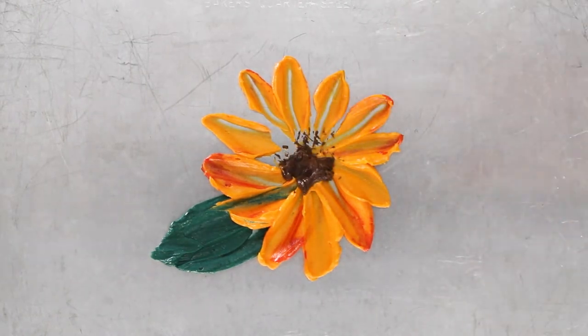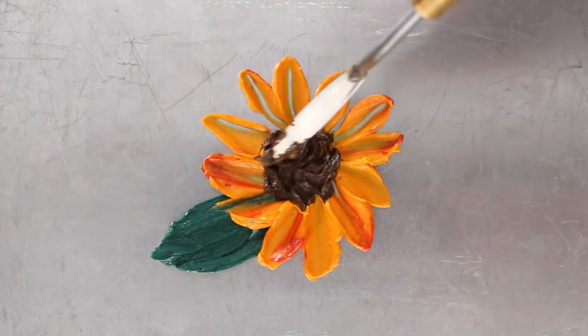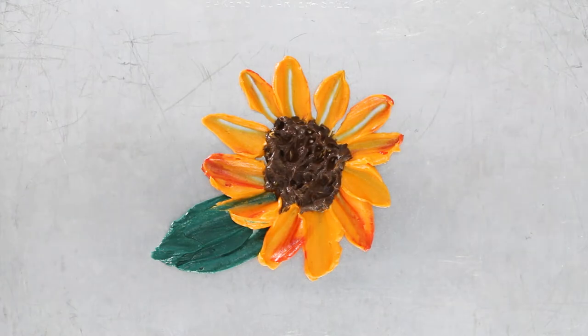Then I'll head around in a circle and make all my petals. And finally, I'll use the very tip of the palette knife to apply brown frosting and make the center of the sunflower.